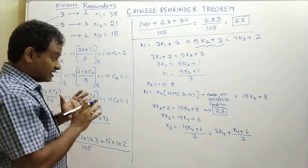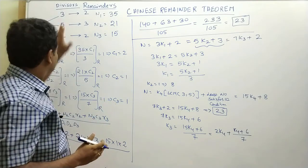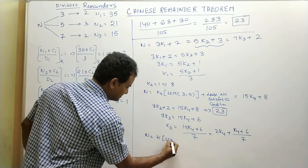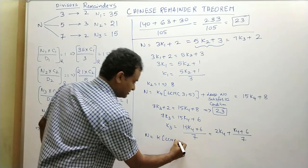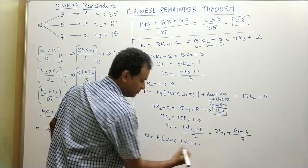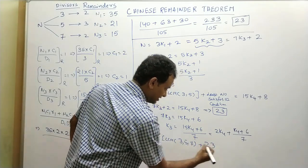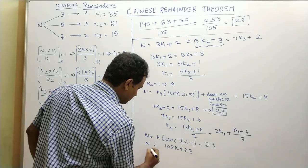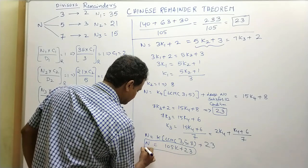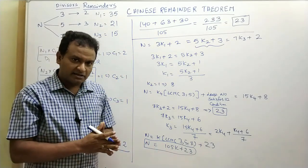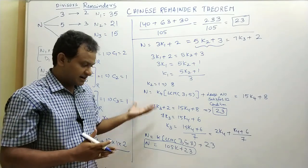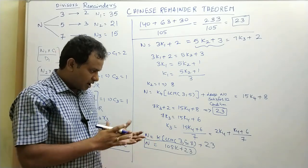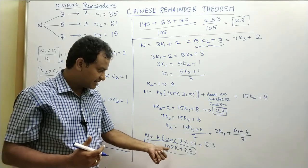The general format of all numbers satisfying these three conditions is n = k × LCM(3, 5, 7) + 23 = 105k + 23. Sometimes you are asked how many numbers between 100 and 1000 satisfy this condition — all such numbers are in arithmetic progression with a common difference of 105.